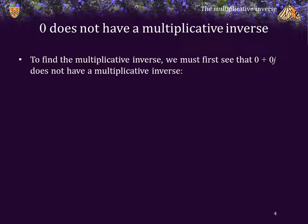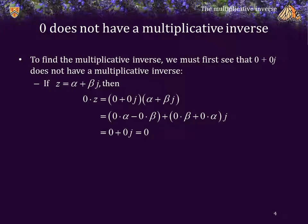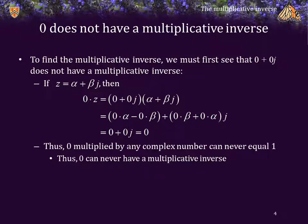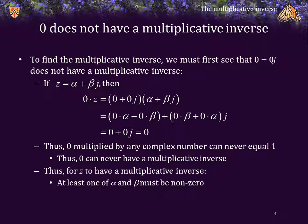To find the multiplicative inverse, we must first see that 0 cannot have a multiplicative inverse. If z is equal to alpha plus beta j, then 0 times z must equal 0. The consequence of this is that 0 multiplied by any complex number equals 0 and can therefore never equal 1. Thus, 0 cannot have a multiplicative inverse, and for z to have a multiplicative inverse, at least one of alpha or beta must be non-zero.